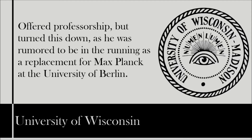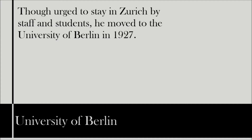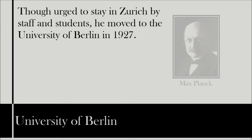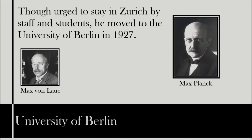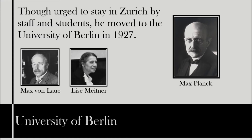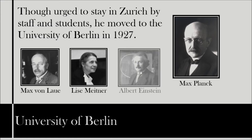He was well loved in Zurich, and himself enjoyed Switzerland, with the administration and students urging him to stay. However, in autumn of 1927, likely in part due to the personal mediation of Max Planck, Schrödinger took up the post in Berlin. Here his peers would include Max von Laue, Lise Meitner, and Albert Einstein.